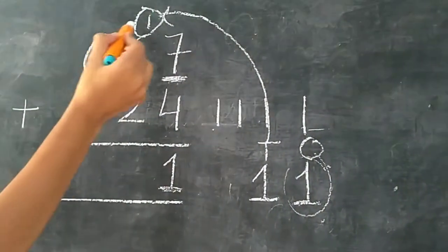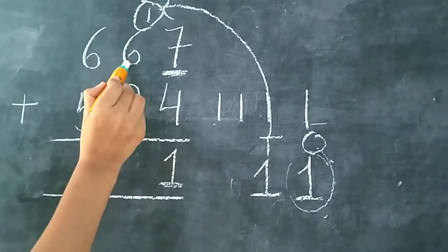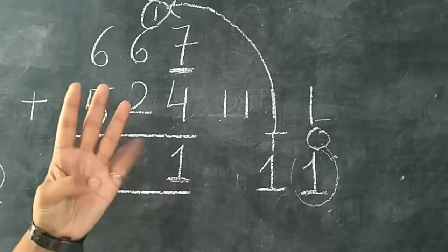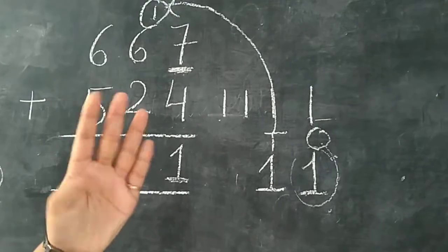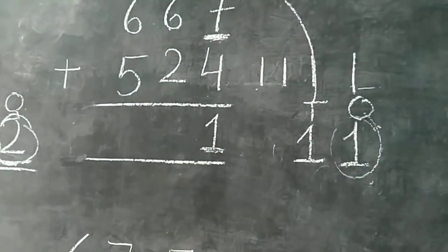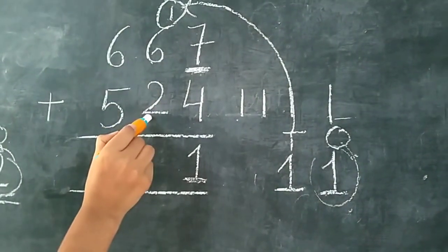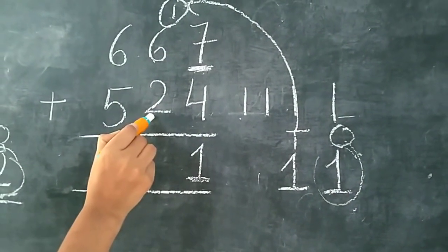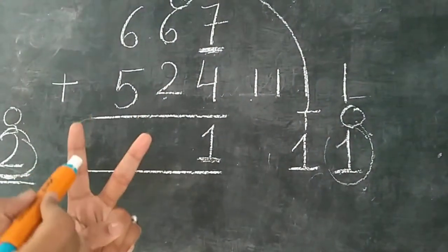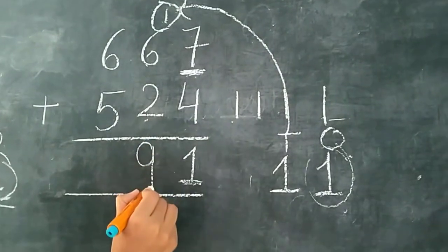Sabse pehle carry ko count karna hai. 1 ke baad aapko 6 count karna hai: 1, 2, 3, 4, 5, 6, 7. 7 ke baad aapko 2 aur count karna hai. After 7, count 2 more: 7, 8, 9. So we write here 9.